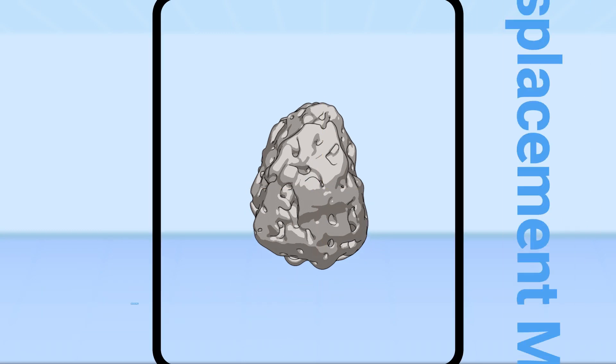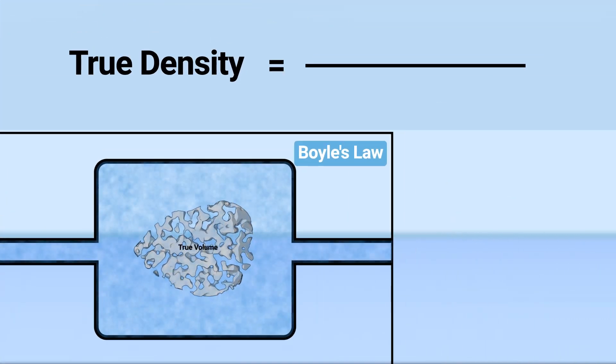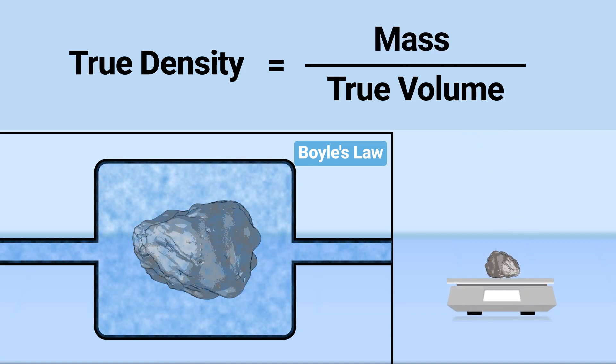That is why scientists turned to the gas displacement method. What is the gas displacement method? The gas displacement method utilizes Boyle's law to measure the true volume of a solid sample by displacing a gas in a closed container, which can then be used to calculate its true density.